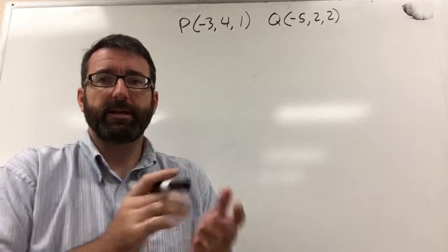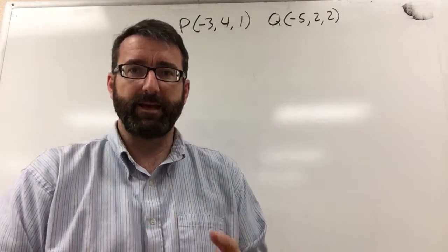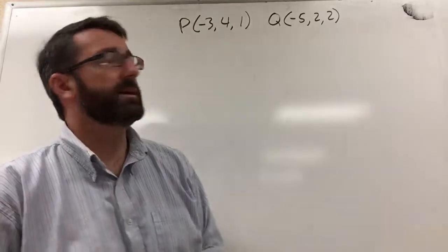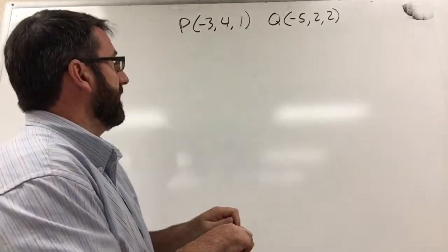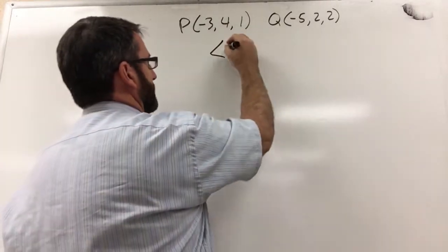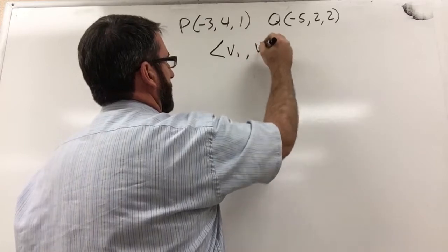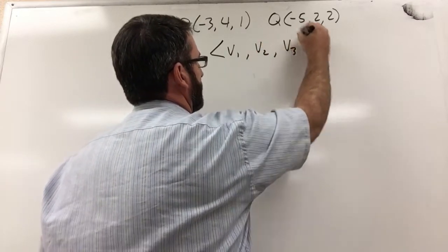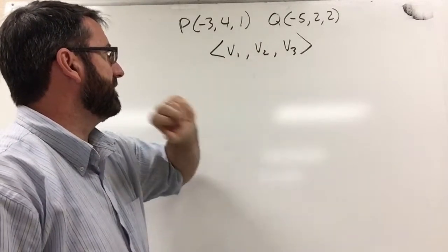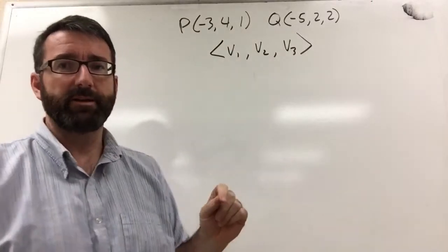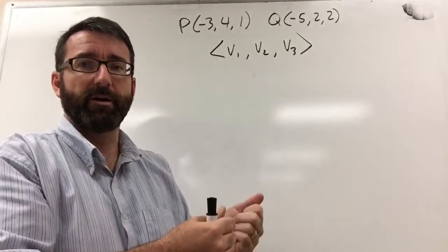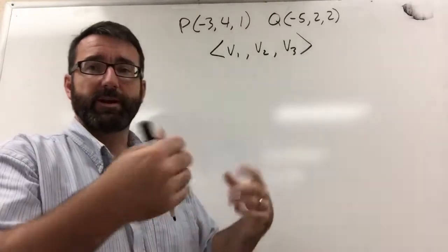We're asked to find the component form and length of a vector with an initial point at P and a terminal point at Q. The component form of a vector is written as V1, V2, V3 inside angled brackets. V1 is the distance traveled on the x-axis, V2 is the distance on the y-axis, and V3 is the distance on the z-axis.